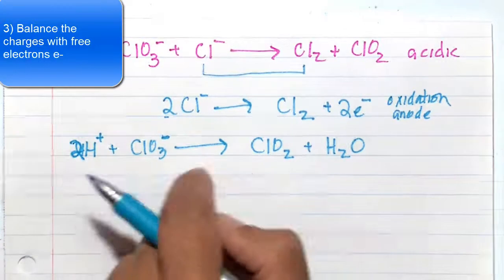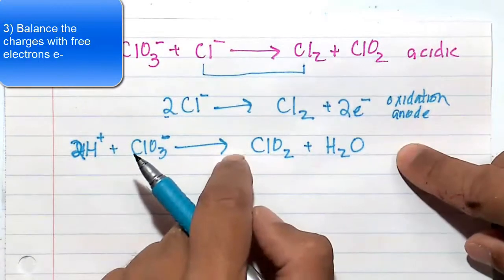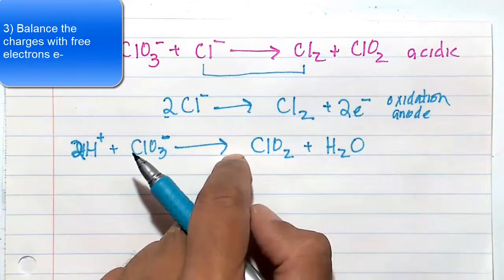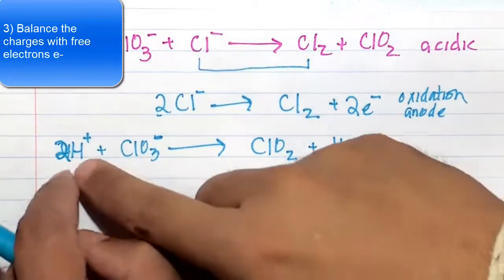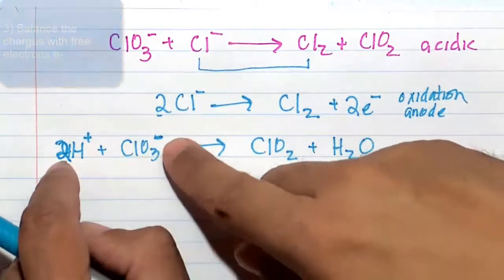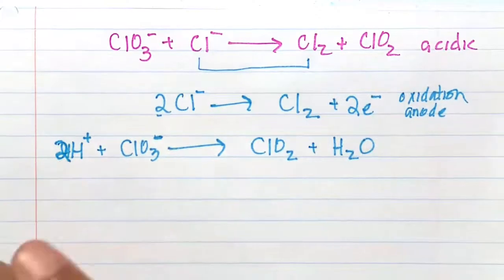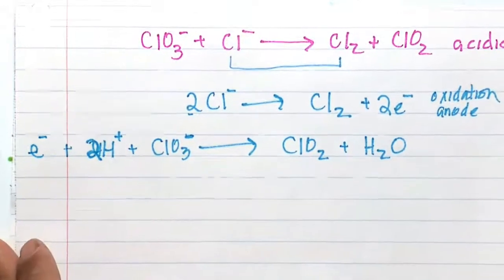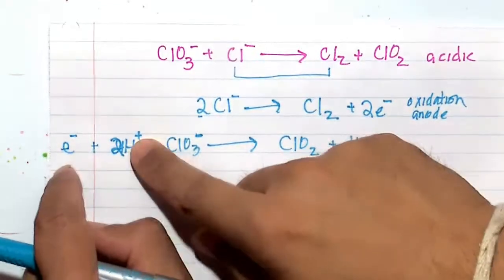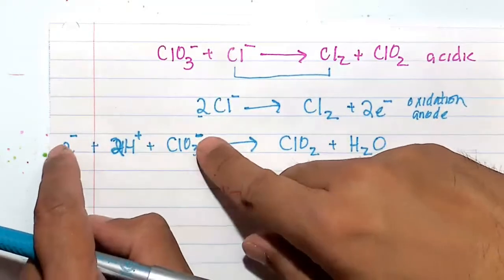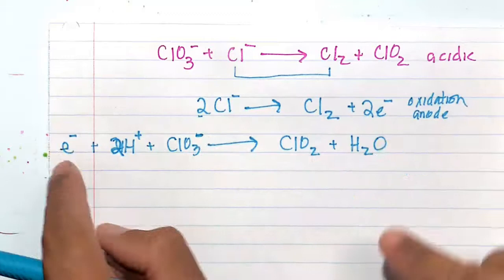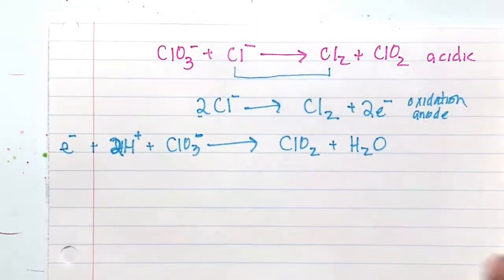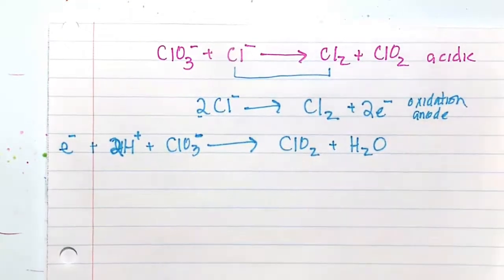So here we have zero on this side of the product with no charge. And here we have plus two minus one. Plus two minus one is plus one. So we need one electron. So plus two and then minus one minus one makes minus two. That's the zero here. And that gives you the zero, balances the zero on the product side.